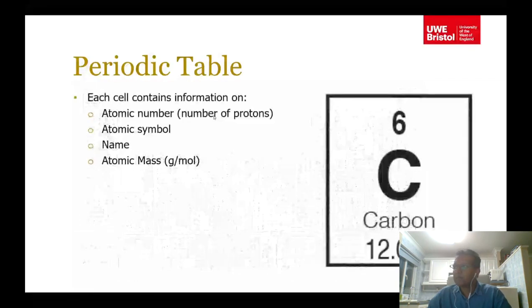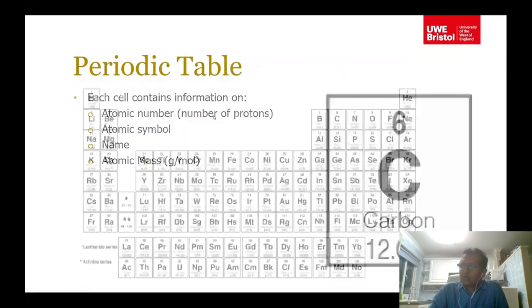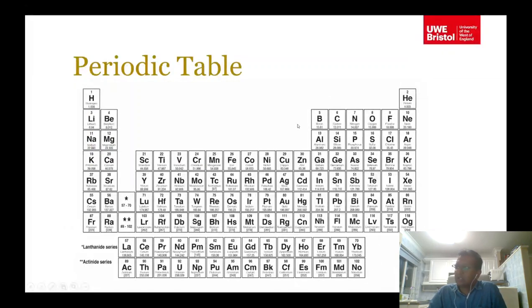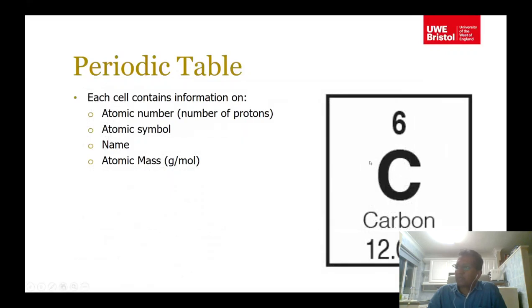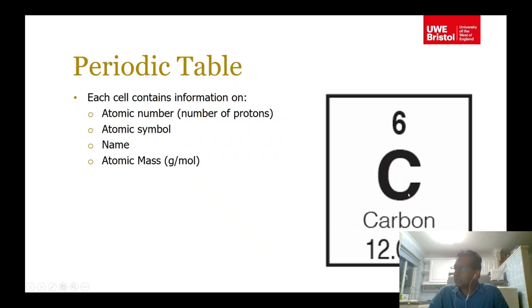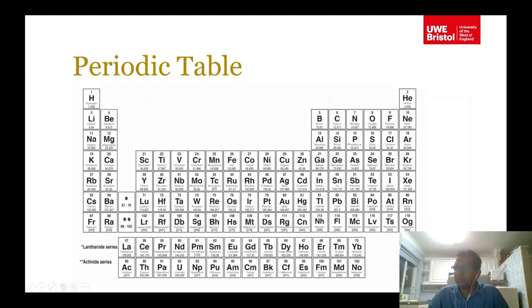If you look closely at one element in the periodic table, for example carbon, the symbol is C, the atomic number is 6, the name is carbon, and the atomic mass is 12.011 grams per mole. For something else, for example sodium, the atomic number is 11, the symbol is Na, the name is sodium, and the atomic mass is 22.90 grams per mole.